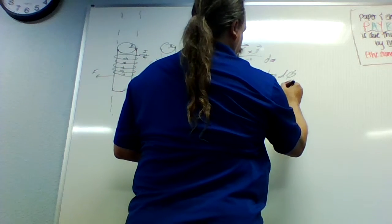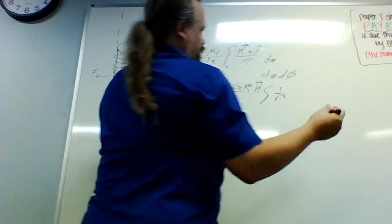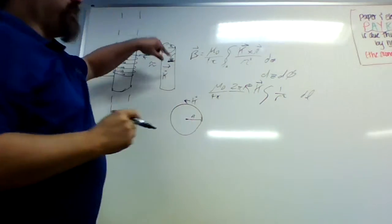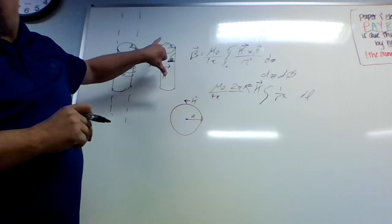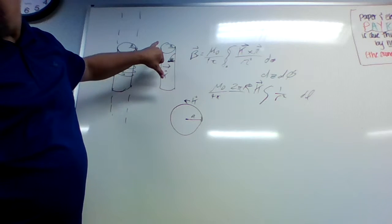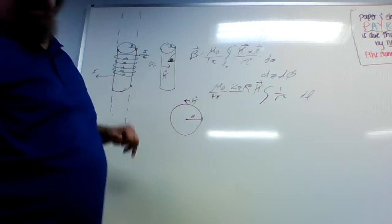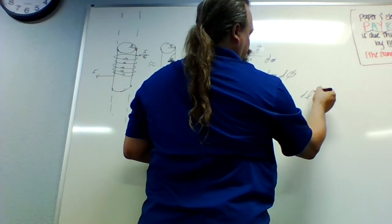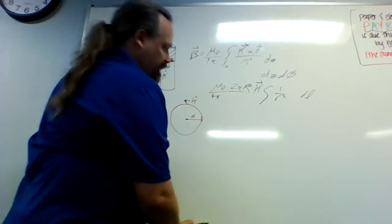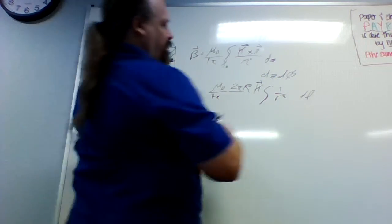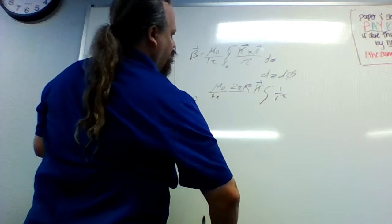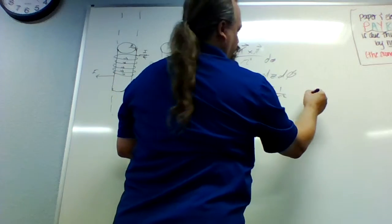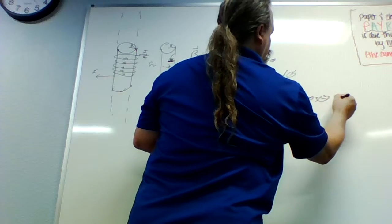So we have 1 over r squared, dl, where that's the length. And then this distance is cosine theta. And so then our L becomes part of that cosine theta d theta, and that gives us a unit length of L.